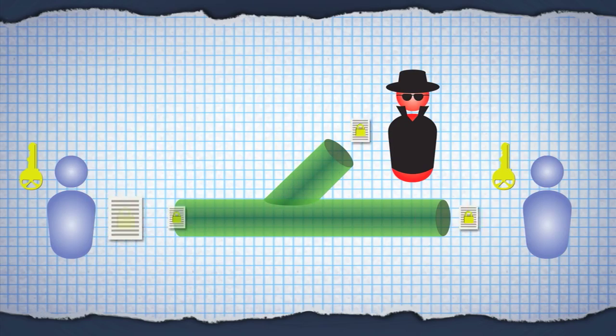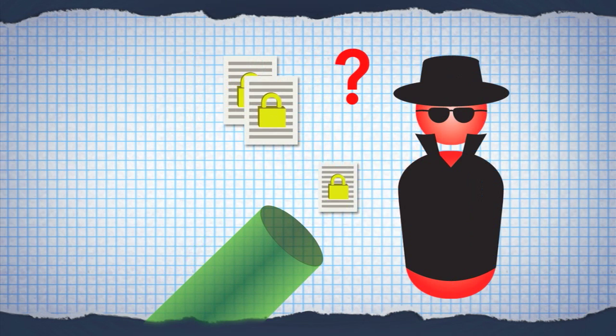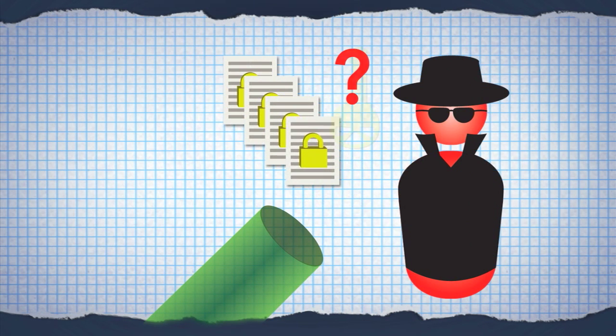To keep a code from being broken you have to keep changing it. But every time you change it you have to tell your friends the new key. This is a fundamental weakness. If you send a new key your enemy could intercept it. And then you're sunk. If you don't send a new key your enemy will figure out the old key eventually.